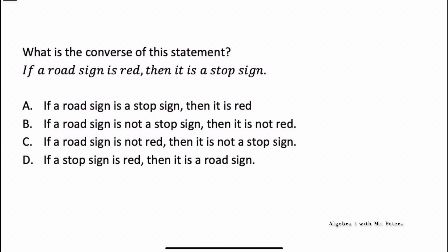Now we're dealing with conditional statements. We know the format is: if P, then Q. The converse flips the relationship to: if Q, then P. So given 'if a road sign is red, then it is a stop sign,' the converse is 'if a road sign is a stop sign, then it is red.' Practice understanding the relationships for converse, contrapositive, and inverse — knowing P-to-Q, Q-to-P, not-P, and not-Q makes these problems much easier. Converse is always the reverse.